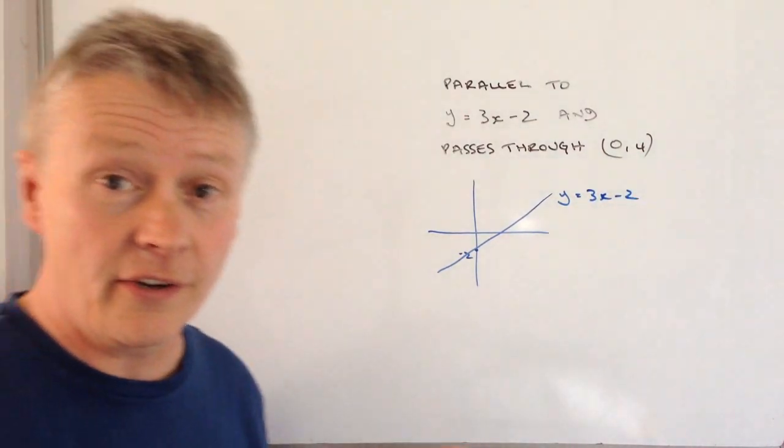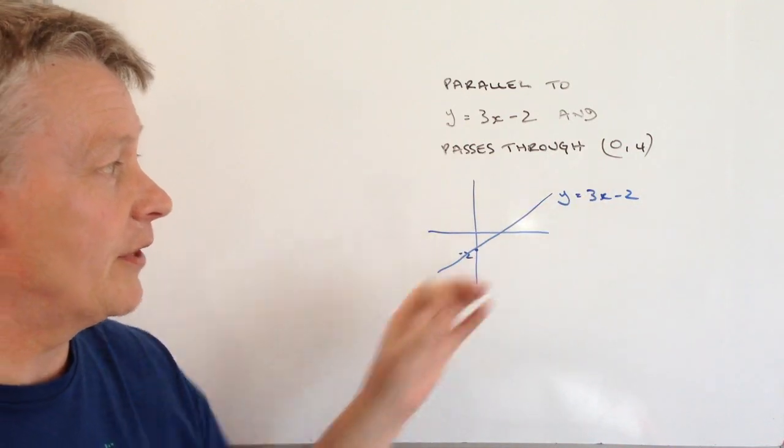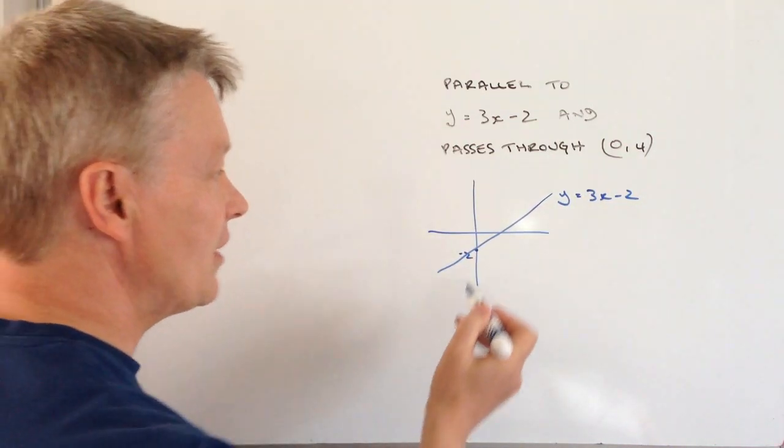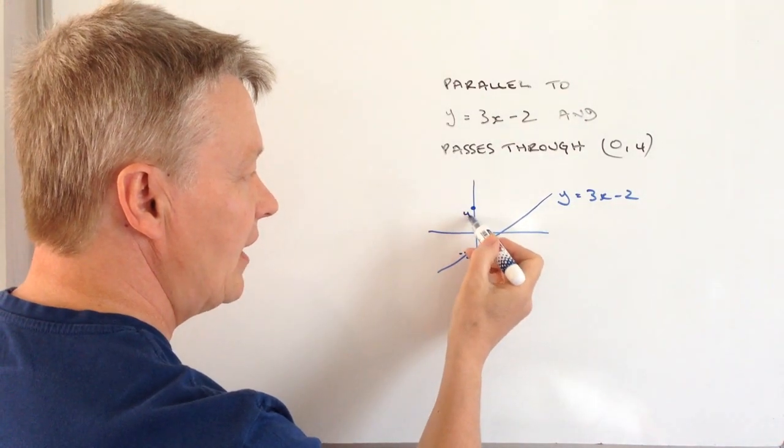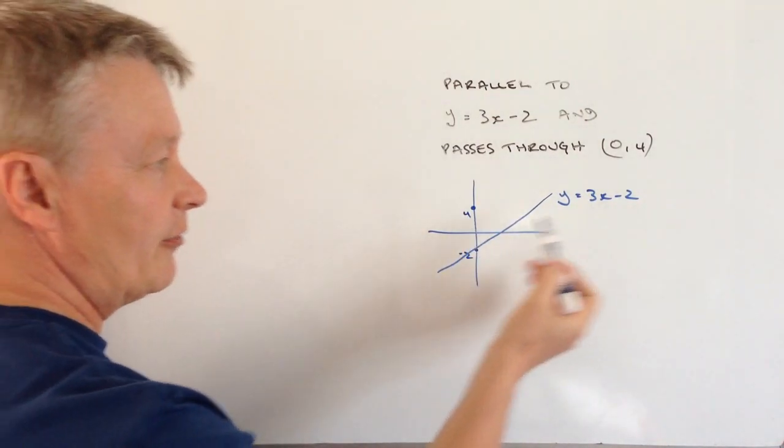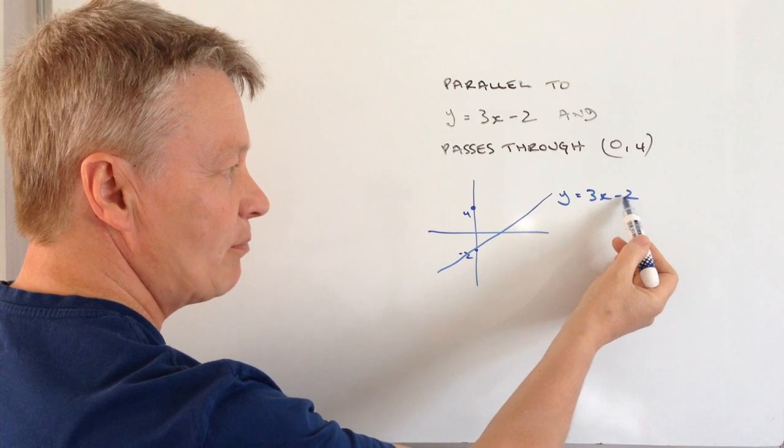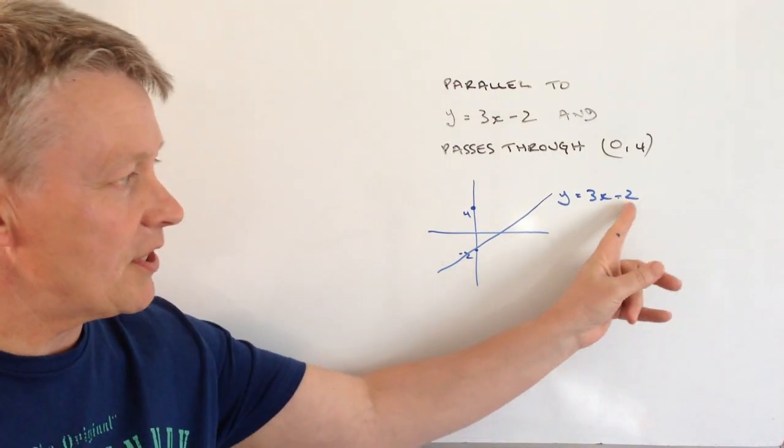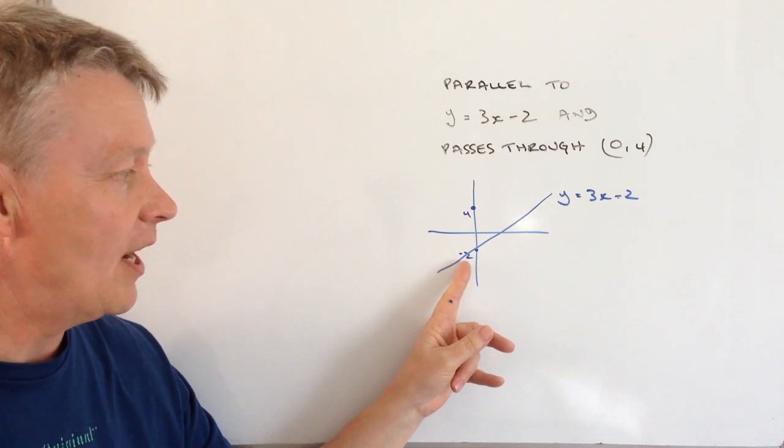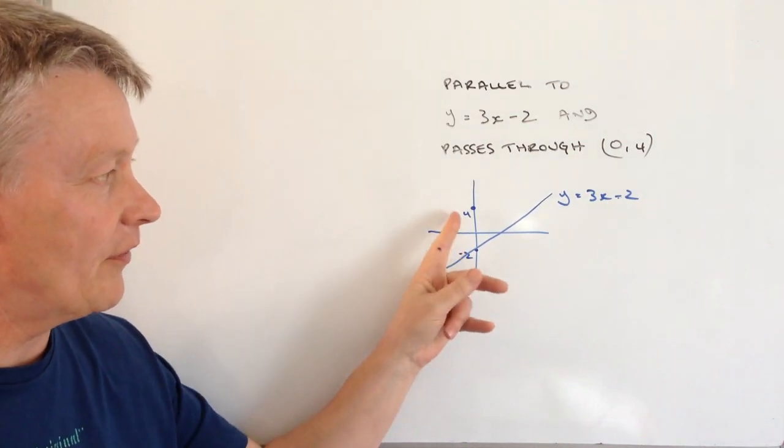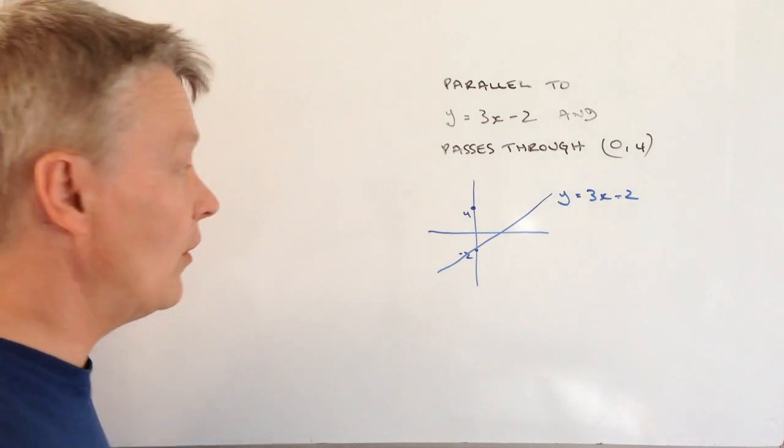What they're asking us to do is write the equation of another line that passes through (0, 4), which is this point here. That's easy enough because this becomes plus 4. This is called the y-intercept. It passes through at minus 2, so the parallel line is going to pass through 4.